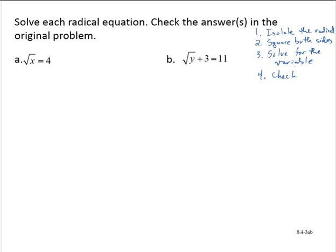Example a: the square root of x equals 4. Notice that the radical is already isolated, so I can jump to step two and square both sides. The square root of x squared is x, and 4 squared is 16.